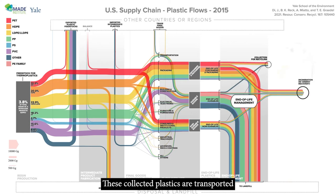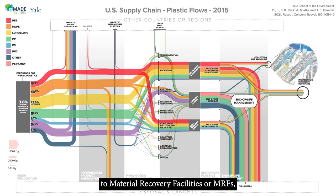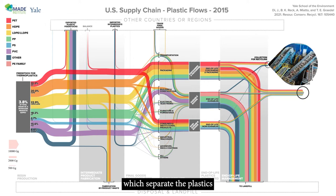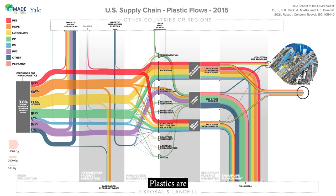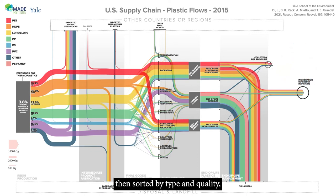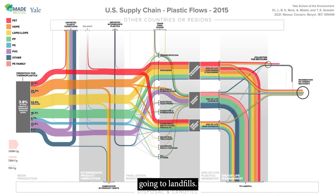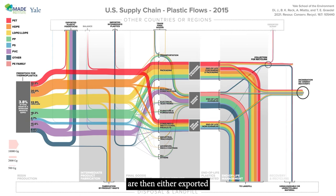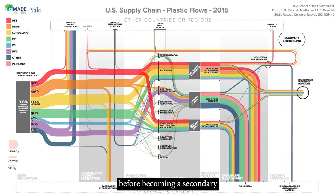These collected plastics are transported to material recovery facilities, or MRFs, which separate the plastics from other recyclables such as metals or cardboard. Plastics are then sorted by type and quality, with some unrecyclable plastics going to landfills. The baled plastics are then either exported or sent for further cleaning and processing to reclaimers, before becoming a secondary feedstock in intermediate product fabrication.